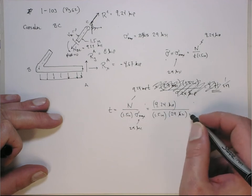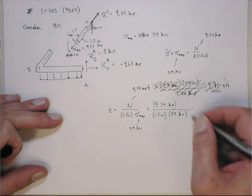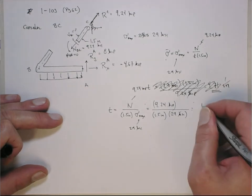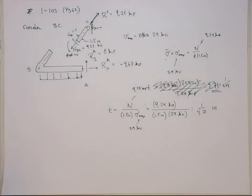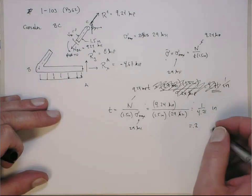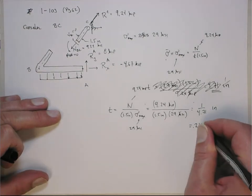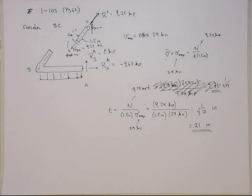So, this is 1 over 1 over inch, which puts inch in the numerator. So, that's 1 over 4.71 inches, which is 0.21 inches, which looks a little more to scale. So, that's the thickness of element BC.